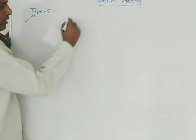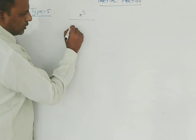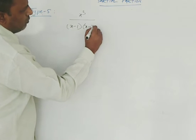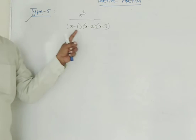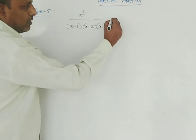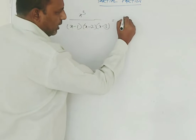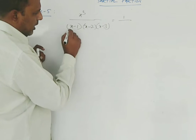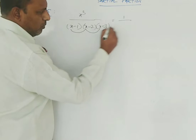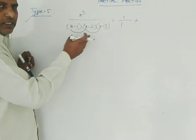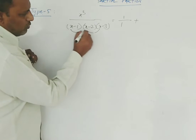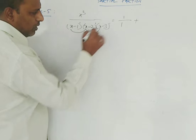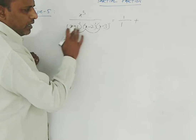Now let us take a full example using the partial fraction method. Consider x cubed by x minus 1, x minus 2, x minus 3. The degree of the numerator is 3. We can write this as the coefficient of the highest degree in the numerator is 1, and in the denominator x times x times x gives x cubed with coefficient 1, so we write 1 plus r of x by g of x. We resolve this into partial fractions since x minus 1, x minus 2, x minus 3 are non-repeated linear factors of degree 1 each — this is Type 1.